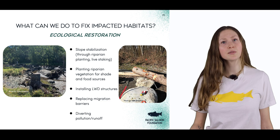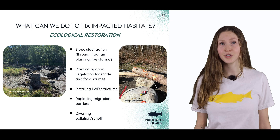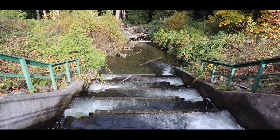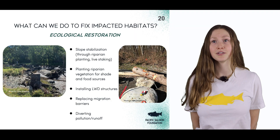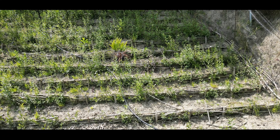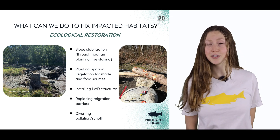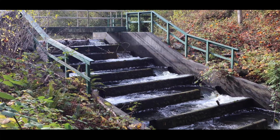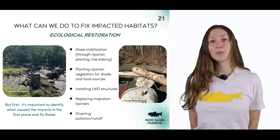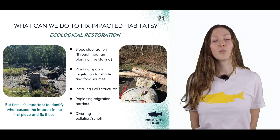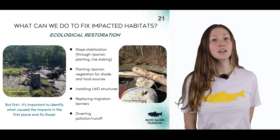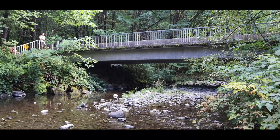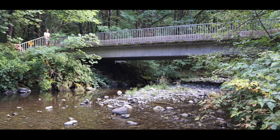So what can we do to fix those impacted habitats? There is a whole branch of science called ecological restoration that is focused on doing exactly that. Some examples include stabilizing the slope through riparian planting and live staking, planting riparian vegetation for shade and food, installing LWD structures, replacing migration barriers or creating a fishway, and diverting pollution or runoff. Before any restoration activities take place, it's important to identify what caused the impacts in the first place and fix those — such as better forestry practices to reduce unnatural sediment load or removing barriers that prevent natural water flow. Taking these steps first can help ecosystems be self-sustaining and resilient into the future.